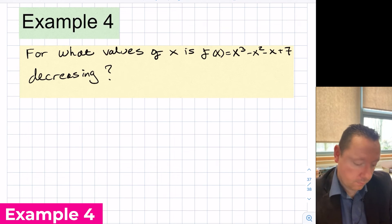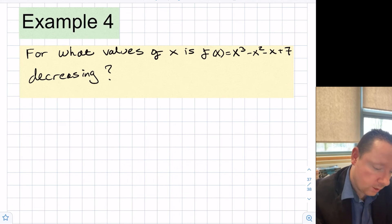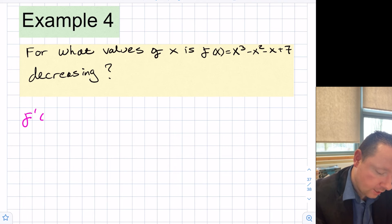Example 4. For what values of x is f of x equal to x cubed minus x squared minus x plus 7 decreasing? We need to work out the derivative, so f dash x equals 3x squared minus 2x minus 1.